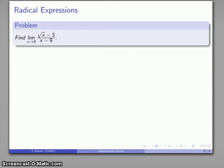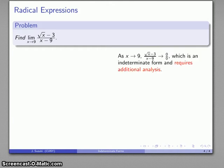So here's another one, square root of x minus 3 over x minus 9. As x goes to 9, this expression goes to root 9 minus 3 over 9 minus 9. That's going to be 0 over 0. So we have another indeterminate form, and we have to do some additional work.